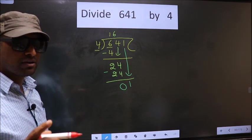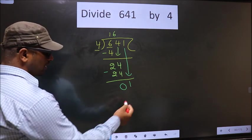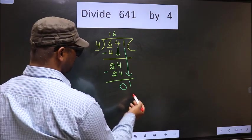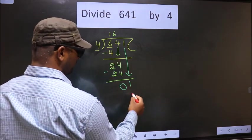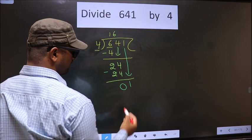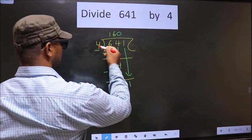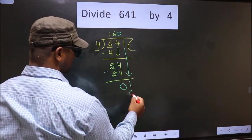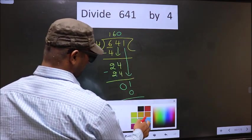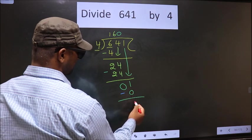Instead what you should think of is, what number should we write here? If we write 4 here, that is larger than 1. So what we do is, we take 0 here. So 4 into 0, 0. Now you subtract. 1 minus 0, 1.